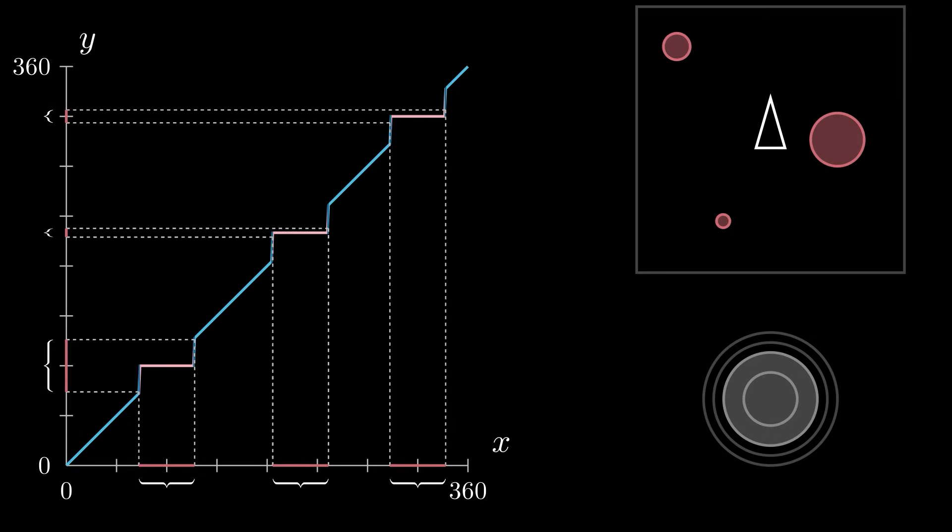The generalization of aim assist to include these smoother functions thus represents a relaxing of the responsibility of the aim assist algorithm, while still addressing the fundamental problem of compensating for imperfect player inputs.